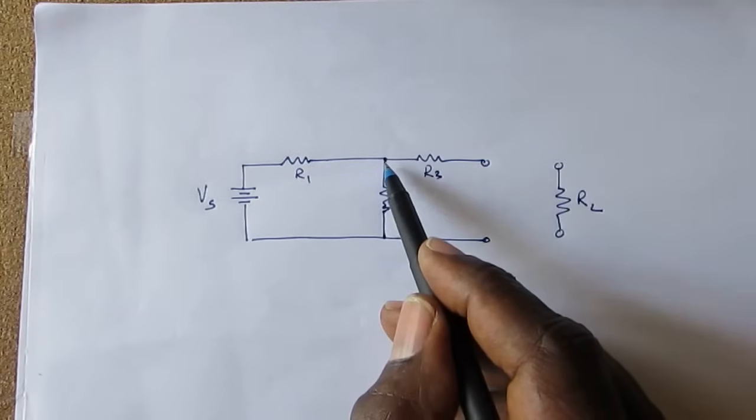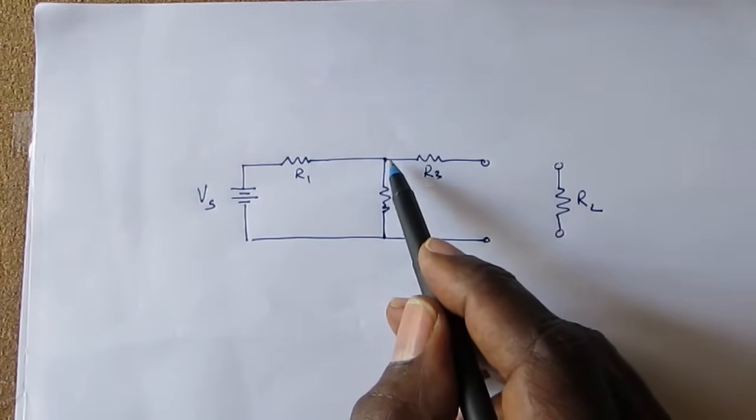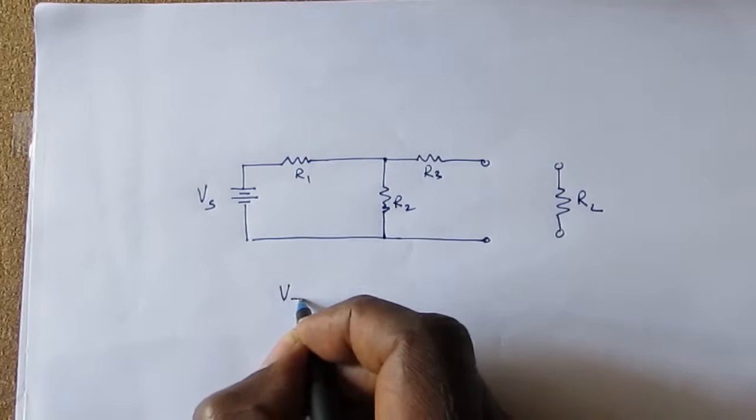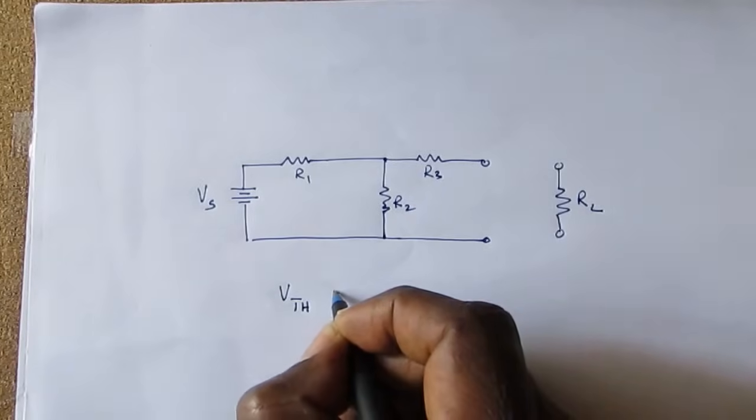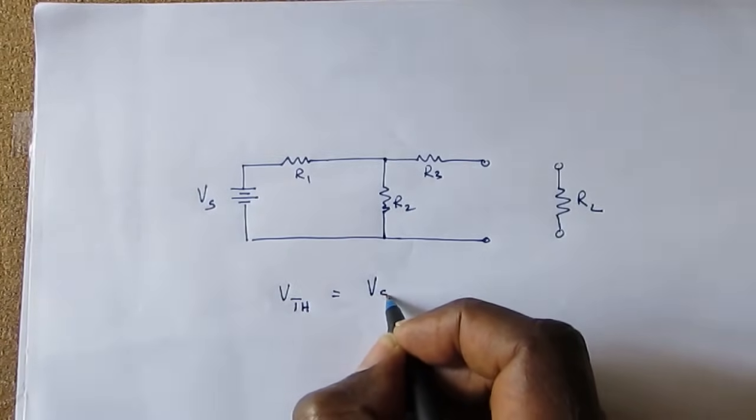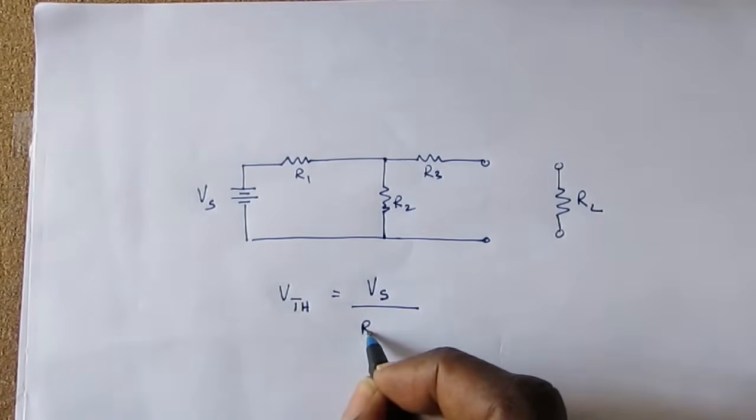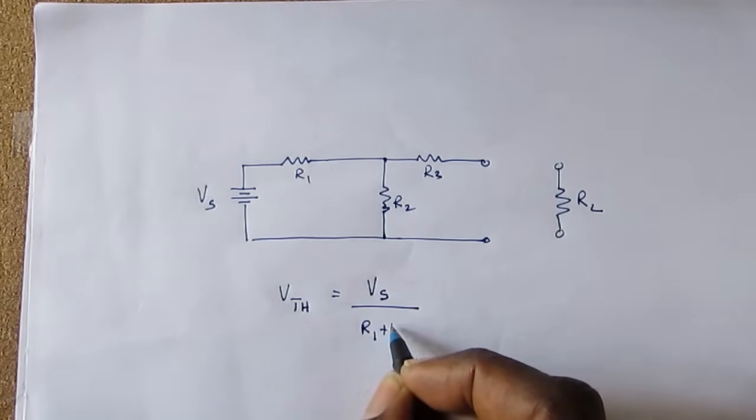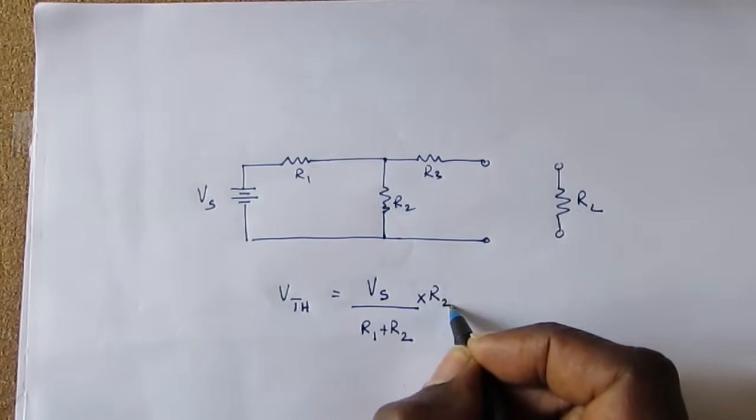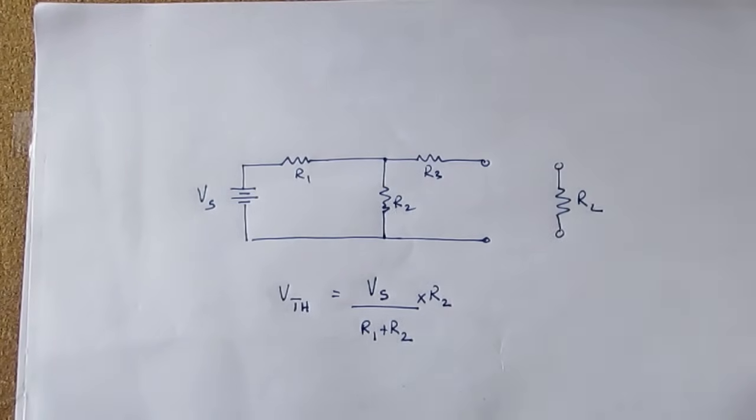So using the voltage divider principle, we will now calculate the Thevenin voltage at this point. The V Thevenin equals the V supply divided by R1 plus R2, multiplied by R2. And that would give us the Thevenin voltage at this point.